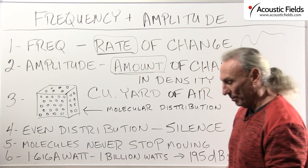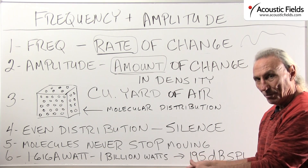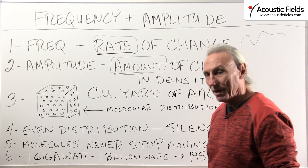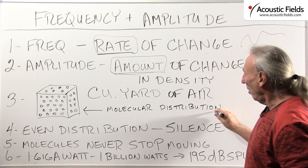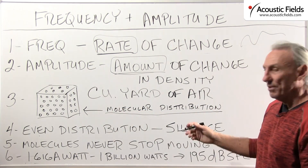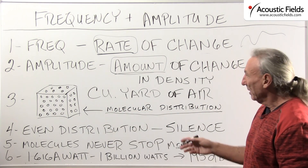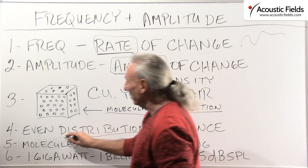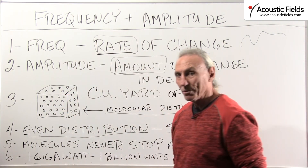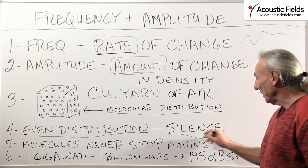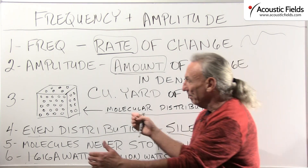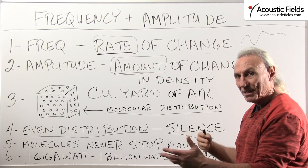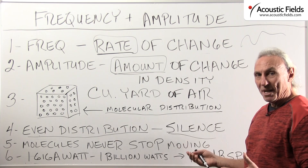If we take a cubic yard — which is 3 feet by 3 feet by 3 feet — we visualize that, and inside that cubic yard we have all these molecules of air. It's always the distribution within that space that defines rate and amount. So if we have an even distribution of all these molecules in there, then we have complete silence. But it's the movement of those molecules — the rate and the amount moving together — that creates sound.